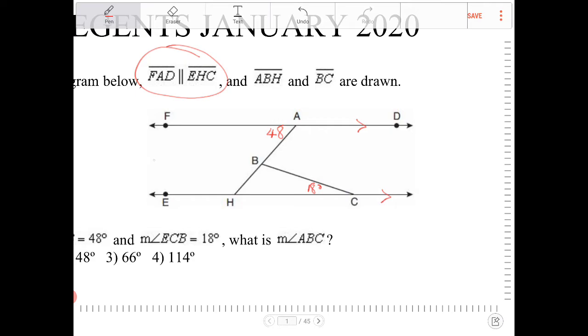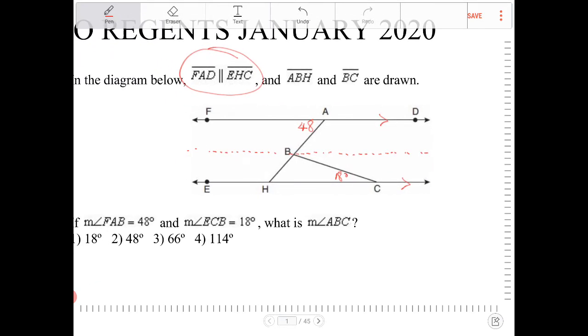And the thing that I'm going to draw here is a line parallel to both of these. Why am I doing that? Well, that's because if I do that, then I can form other angle relationships that weren't there before.